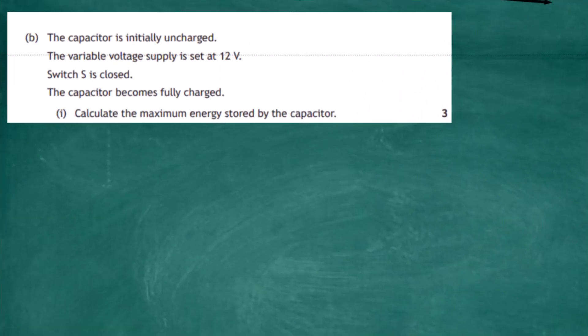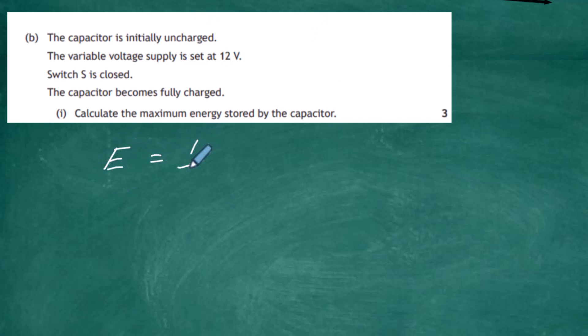Question 13 part b. The capacitor is initially uncharged, the variable voltage supply is set at 12 volts, and switch S is closed. For three marks, we must calculate the maximum energy stored by the capacitor when fully charged. The relationship sheet gives us that the energy stored in a capacitor E equals one half times capacitance times the maximum voltage squared — E = ½CV².